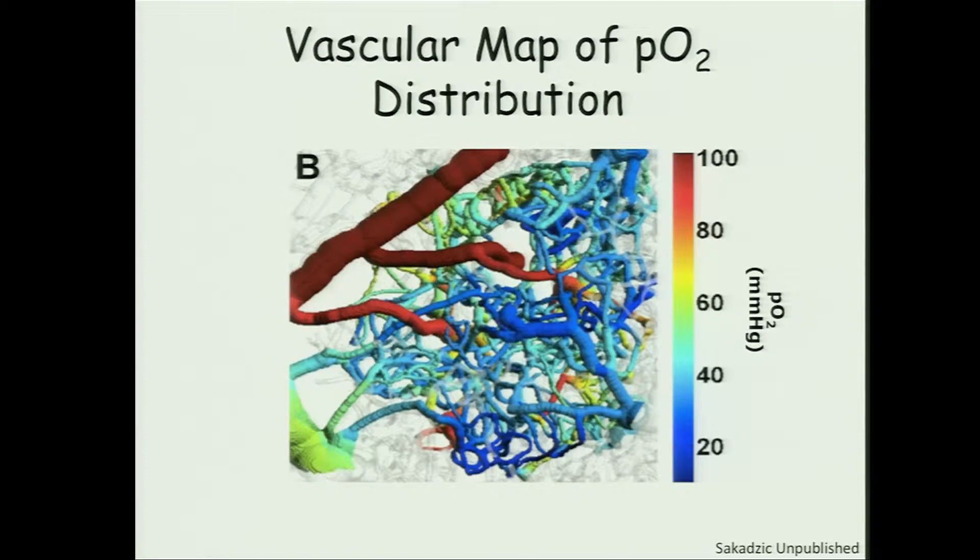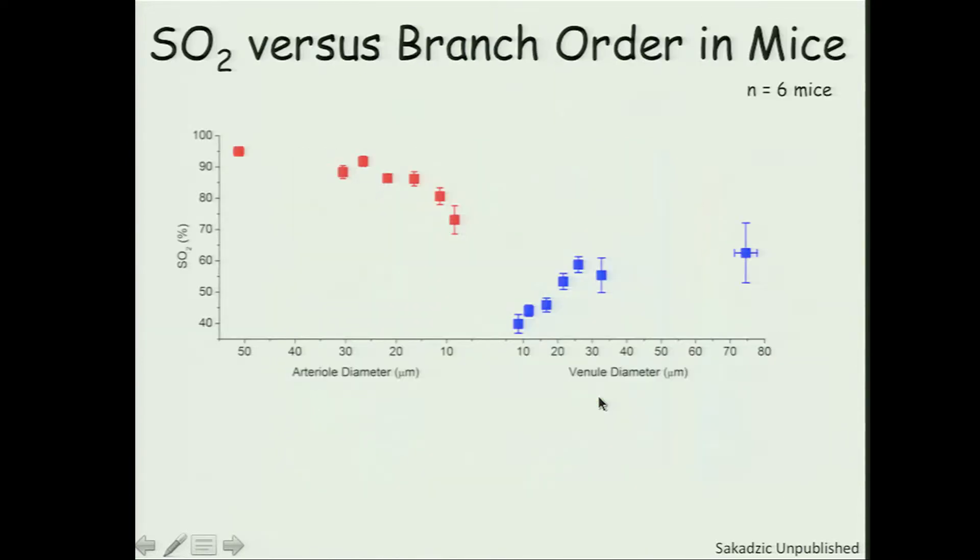So here's a representative image of the PO2 distribution within the cortex of a mouse. We've measured PO2 at multiple points, and then we interpolate between those points. You can really follow smoothly the distribution of oxygen from the arterials with high oxygenation into the capillary network, and then draining into the veins. We've done this over multiple mice, and we can get the statistics now and plot oxygenation in the arterials and veins of different diameters.